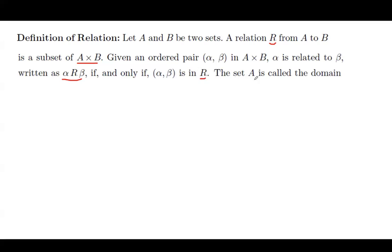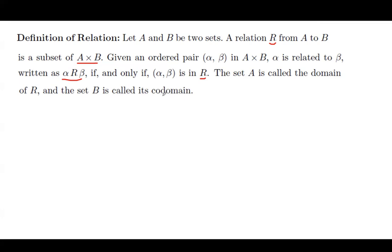The set of all first elements, or set A, is called the domain of the relation. And set B, which is the set of all output values, is called the codomain — not necessarily the range.